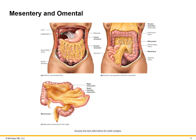Structures called omenta tether various organs in the abdominal cavity. In the upper right quadrant you can see the liver, and a band of connective tissue tethering the stomach and liver is called the lesser omentum. When you open the skin and musculature, you encounter a layer of adipose tissue forming a curtain-like sheet covering most of your small intestine and parts of your large intestine, called the greater omentum.